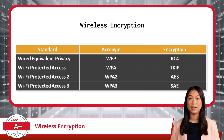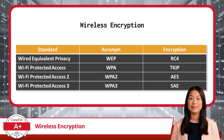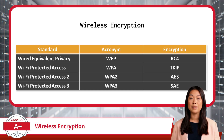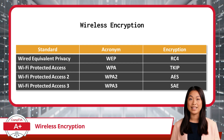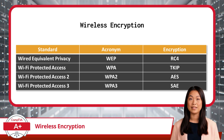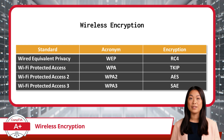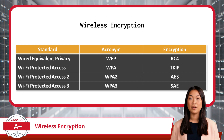Next in line is Wi-Fi Protected Access, or WPA. This standard was introduced as a temporary fix to the glaring issues of WEP. WPA utilized Temporal Key Integrity Protocol, known as TKIP, which significantly improved security by dynamically changing encryption keys. Unlike WEP's static keys, TKIP provided an additional layer of security, making it more difficult for intruders to break in. However, WPA still had its limitations and vulnerabilities, as TKIP was eventually found to have weaknesses of its own, making WPA an interim solution rather than a long-term fix.